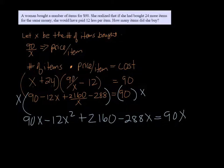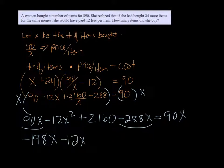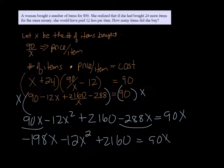On the left side we can combine our like terms. So 90 minus 288 is - well, let's see - 90 minus 288 is negative 198X. So minus 12X squared plus 2160 equals 90X.